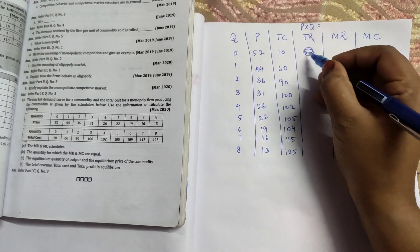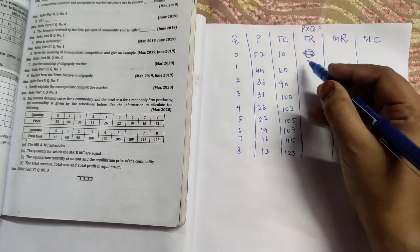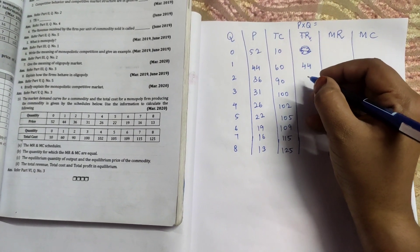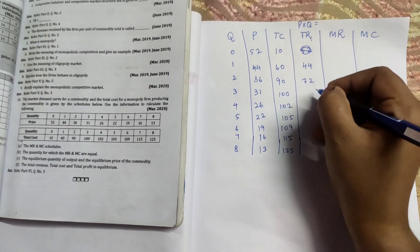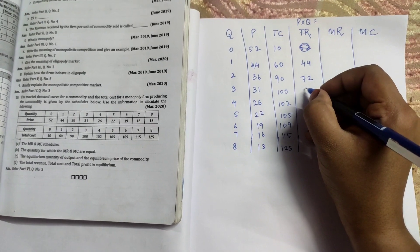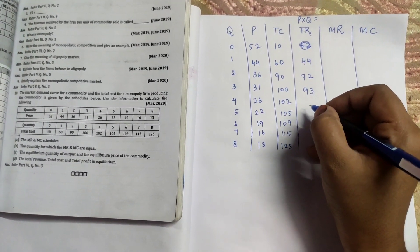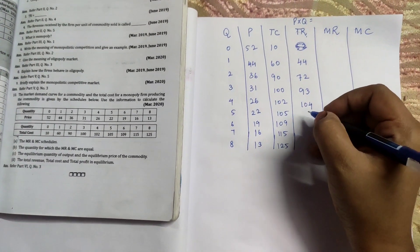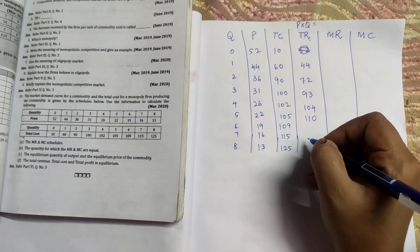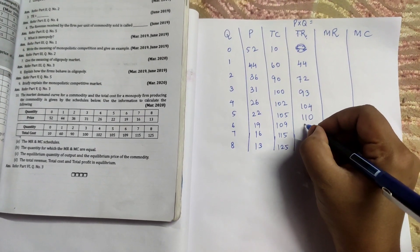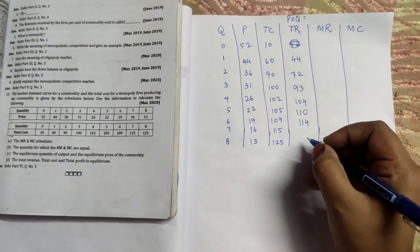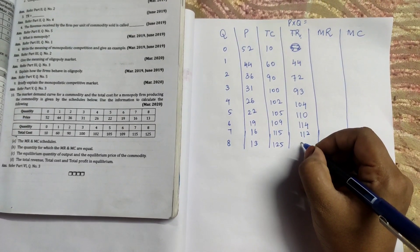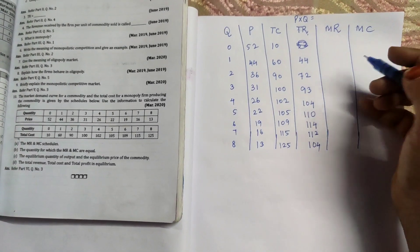So let's calculate: 0 into 52 is 0, anything multiplied by 0 is 0. 1 into 44 is 44. 2 into 36 is 72. 3 into 31 is 93. 4 into 26 is 104. 5 into 22 is 110. 6 into 19 is 114. 7 into 16 is 112. 8 into 13 is 104.